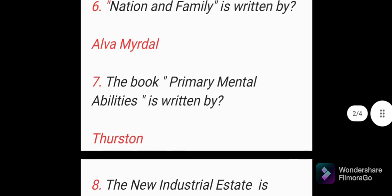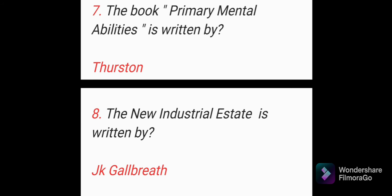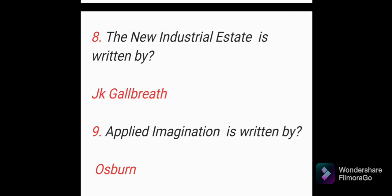The sixth book is Nation and Family, written by Alva Myrdal. The seventh book is Primary Mental Abilities, written by Thurstone.